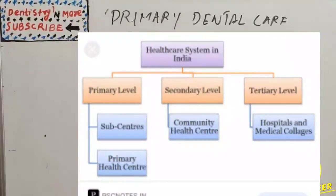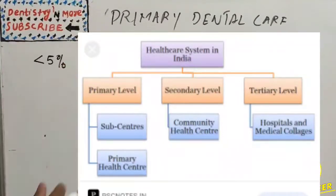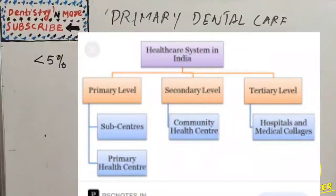In the Indian scenario, primary dental care is at a very nascent state. We have primary health centers and sub-centers in most villages, but less than five percent of primary health centers have a dentist on duty. The main problem is that keeping a dentist is very costly — dentists require a dental chair, equipment, and other accessories — making it very unlikely for a dentist to be appointed at a primary health center.